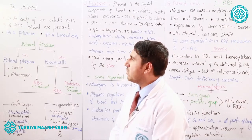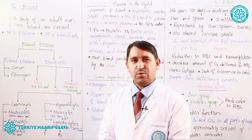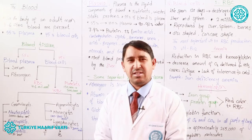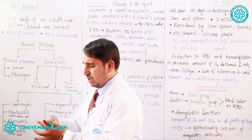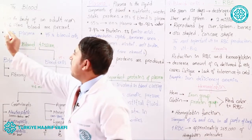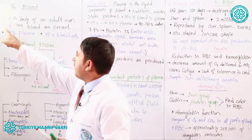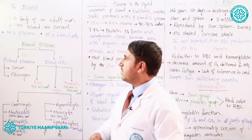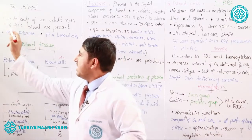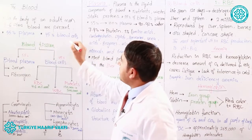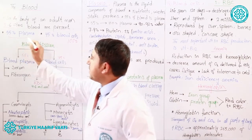First of all, we are coming to the definition of blood. Blood is a type of connective tissue which transports oxygen and other nutrients to all parts of the body. In the human body, we have five to six liters of blood.